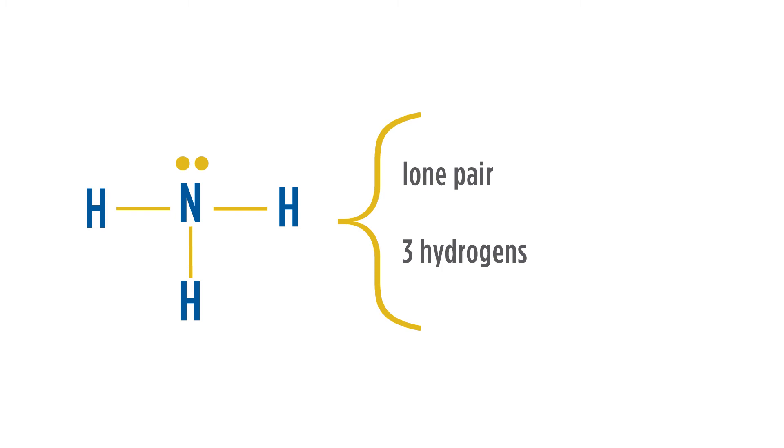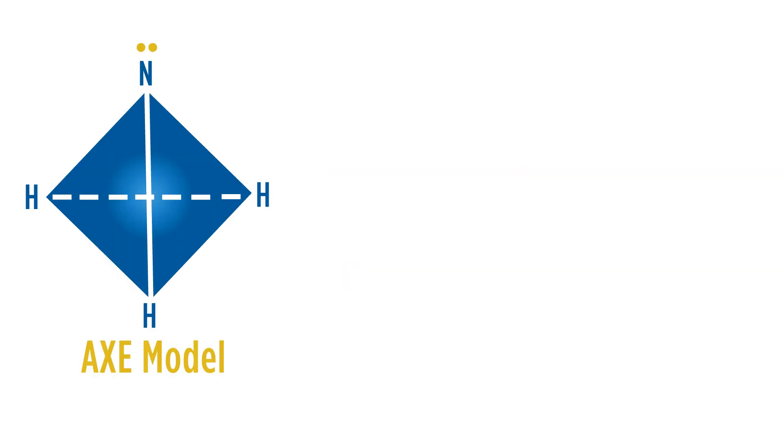Now we can use this to figure out the ideal arrangement. With four electron groups around a central atom, the ideal arrangement would be a tetrahedral-like structure. Notice I'm saying tetrahedral-like because we're going to have to go back and verify. If we look at our AXE model, we notice here that we have the central atom and we have three bonded atoms and one lone pair. From the AX3E, we'll figure out that the geometry is trigonal pyramidal.